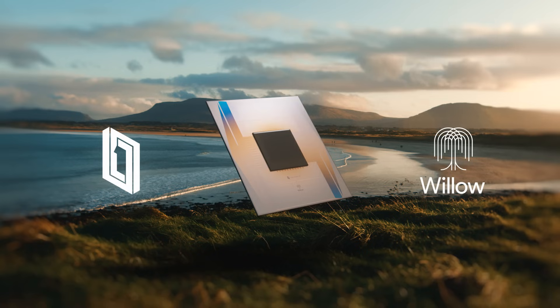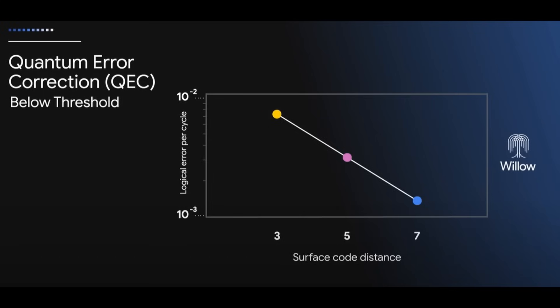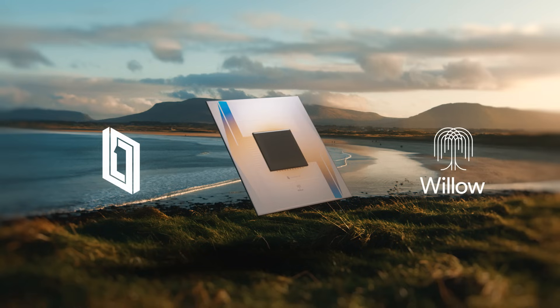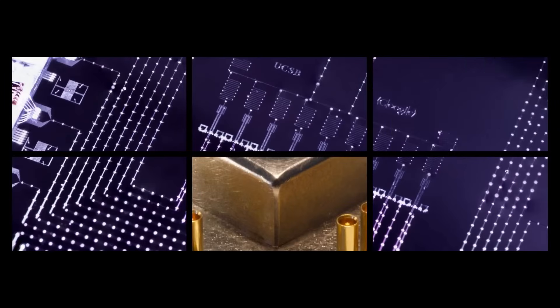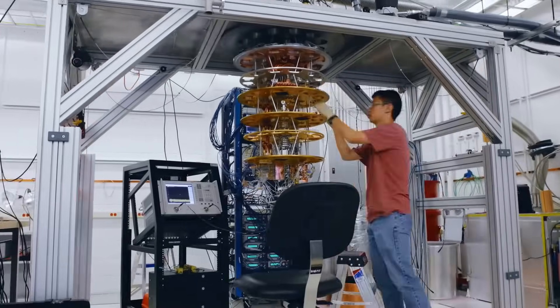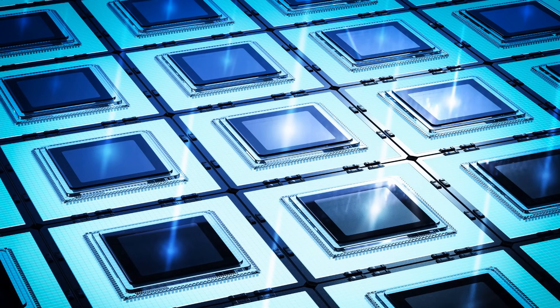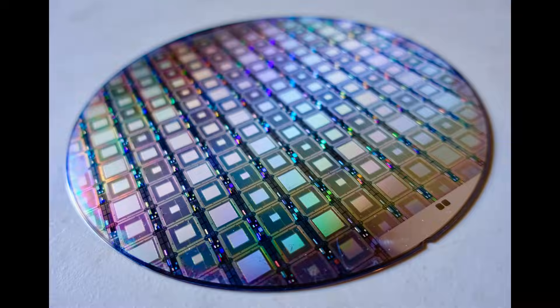Google's Willow chip marks a major breakthrough in this area. With the Willow chip, as the number of qubits increases, error correction happens faster than new errors are introduced. This means that the error rate decreases as more qubits are added. This is the game-changing innovation introduced by Willow. It resolves a problem that quantum computing has faced for nearly 30 years. Now, with future quantum chips, adding more qubits will not proportionally increase error rates. This advancement not only makes quantum computers more scalable, but also opens the door to building larger, more powerful quantum chips without being limited by error management challenges.